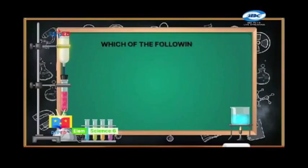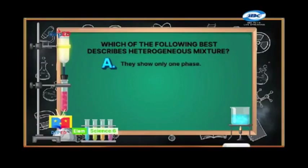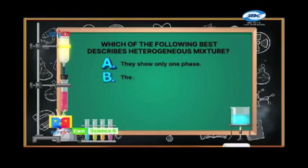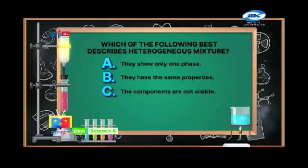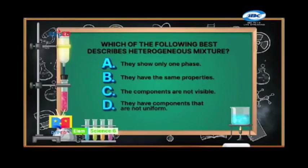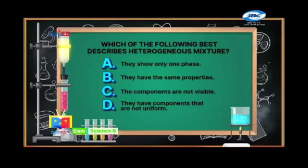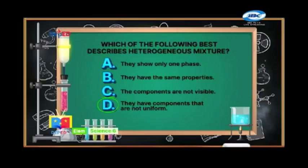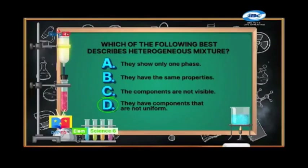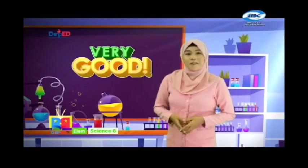Number three: Which of the following best describes a heterogeneous mixture? A. They show only one face. B. They have the same properties. C. The components are not visible. D. They have components that are not uniform. The correct answer is Letter D — they have components that are not uniform. Very good! You already learned something from our previous episode.